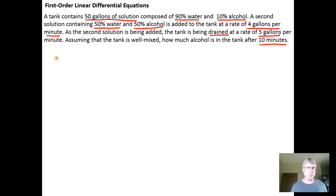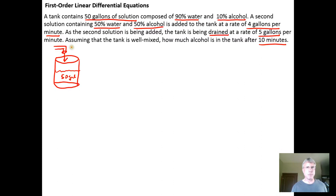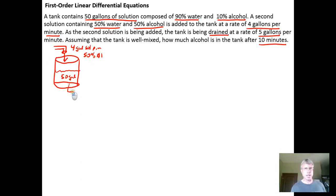Drawing a quick picture: I have a tank that starts out with 50 gallons of solution. Solution is being piped into the tank at 4 gallons per minute, and that incoming solution is 50% alcohol. At the same time, we're draining the tank — piping solution out at 5 gallons per minute. We're asked how much alcohol is in the tank after 10 minutes.